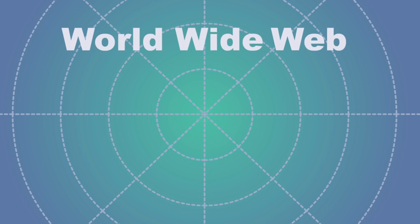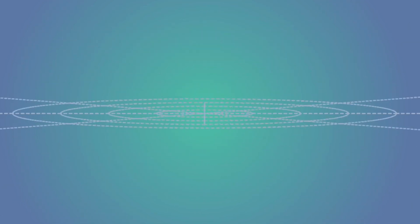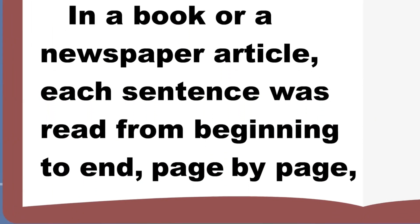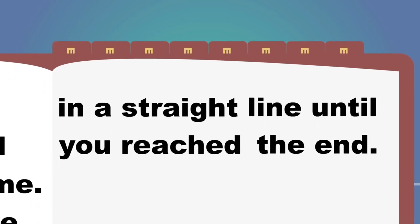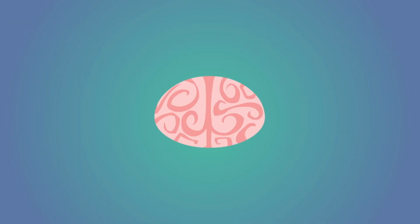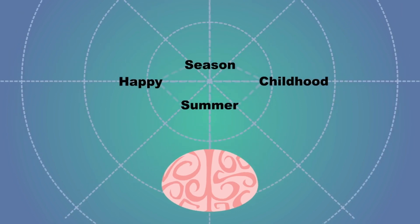Prior to the web, we used to consume most information in a linear fashion. In a book or newspaper article, each sentence was read from beginning to end, page by page, in a straight line until you reached the end. But that isn't how our brains actually work. Each of our thoughts is linked to other thoughts, memories, and emotions in a loose, interconnected network — like a web.